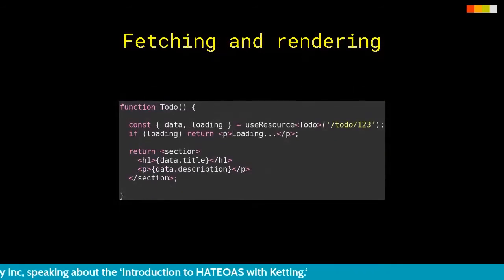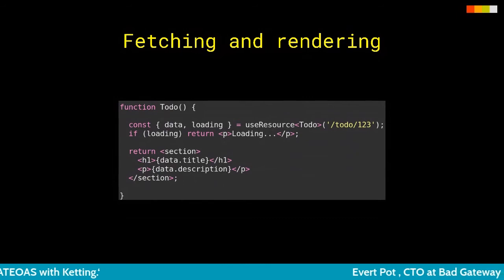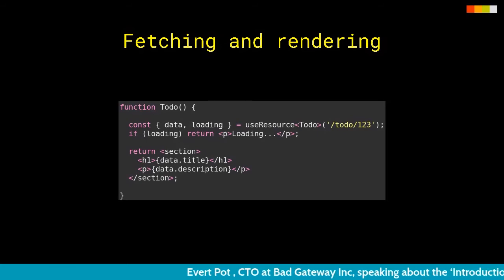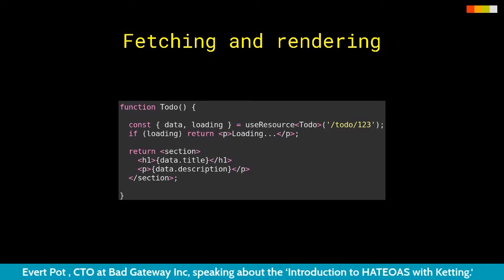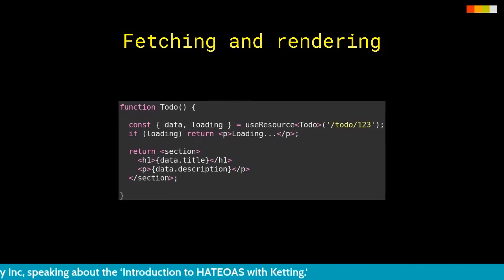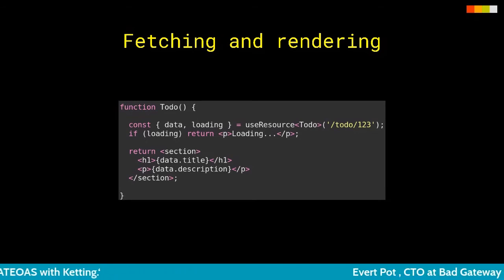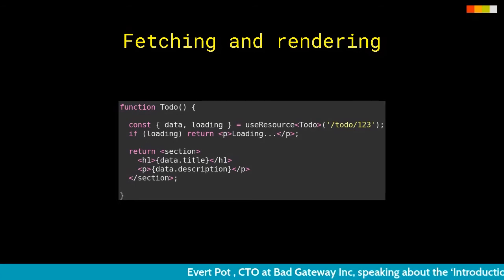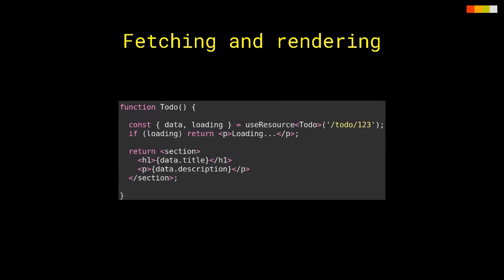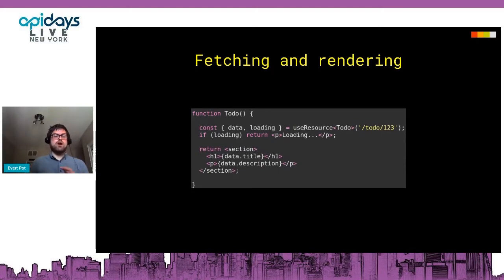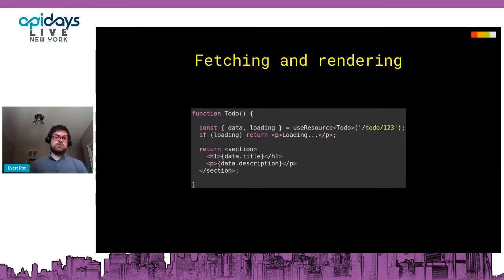Here's an example of how you might render something from a server. If your API has a to-do endpoint, you can use our useResource hook to get information from that to-do. You get back data and loading — actually six more things, but we won't go too deep now. Loading will be true as long as we don't have a response yet. As soon as we do have the data, the bottom part of the component will be rendered. What's also interesting is that if you use the same resource in two different mounted components, if one gets a state update, so does the other — everything works from a shared cache.